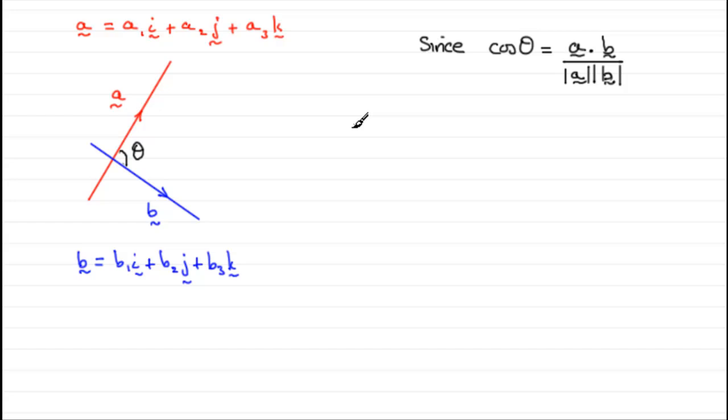Then what we would get is that A dot B would equal the magnitude of A times the magnitude of B times the cosine of the angle theta, the angle between the two vectors.